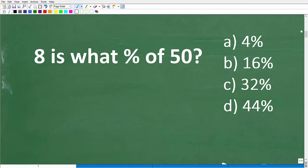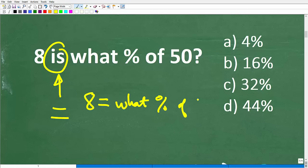So first things first, here is the problem. And the question is what? Well, 8 is. Now, one thing that you want to realize in mathematics, when you see the word is, that's always the equal sign. So effectively, you can kind of think of this this way: 8 is equal to what percent of 50? So again, this word is the equal sign.